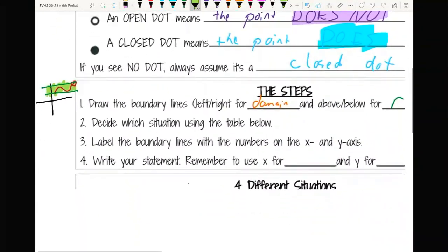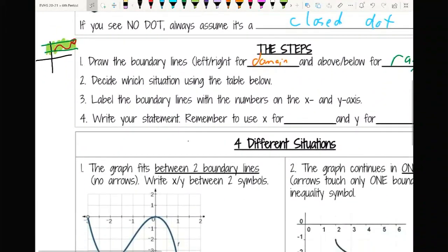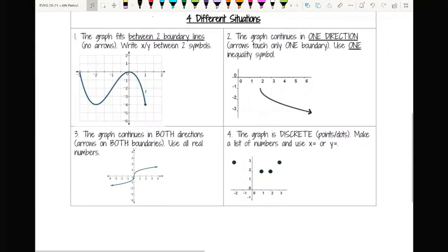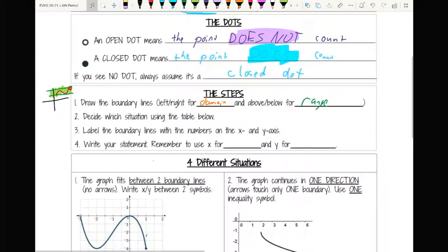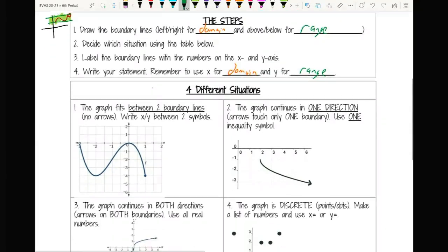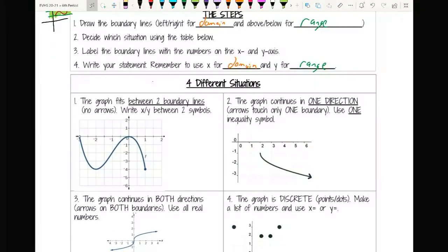Decide which situation we're using using the table below. Those are the four different conditions. You'll see what those look like in a second. And then label the boundary lines and write your statement. Remember, X is for domain. And Y is for range. So what I'm going to do is run through all four domains, and then we'll come back and run through all four ranges.